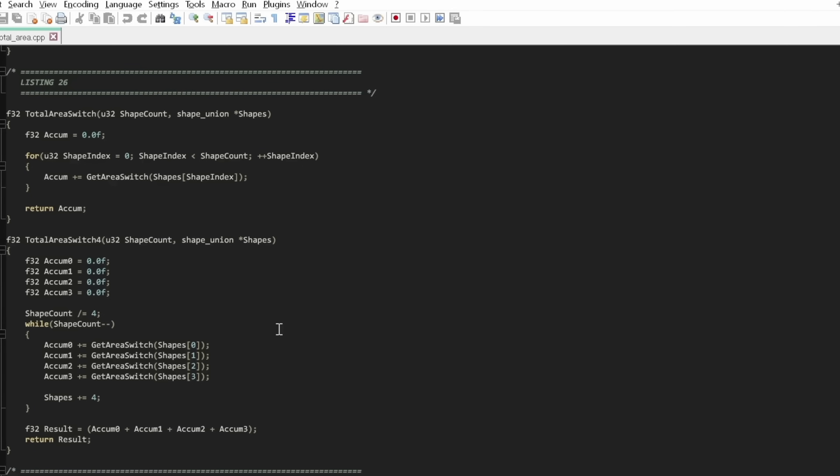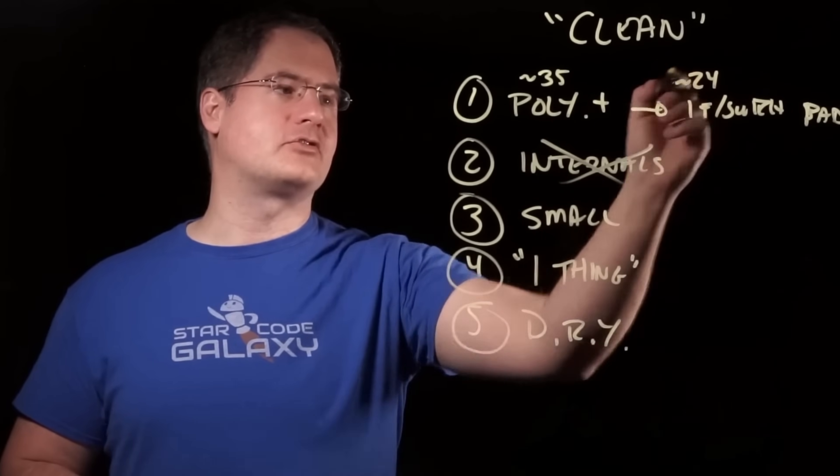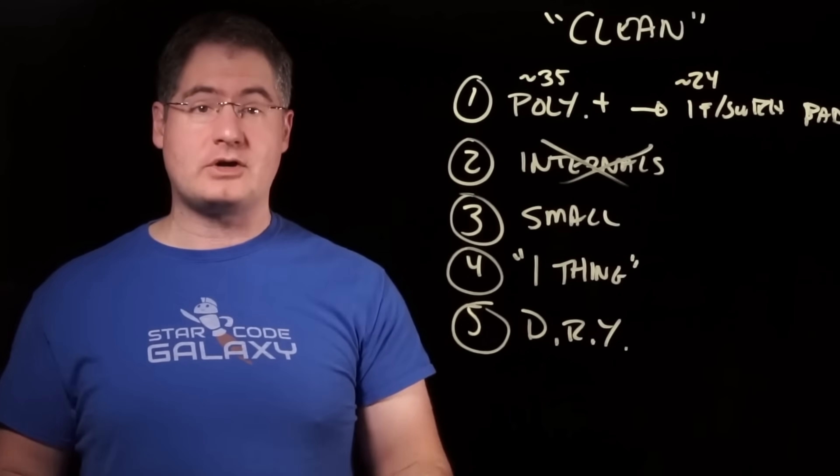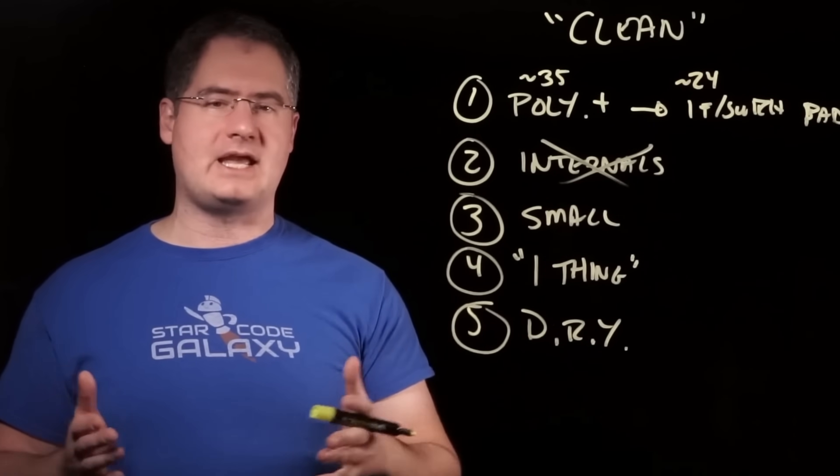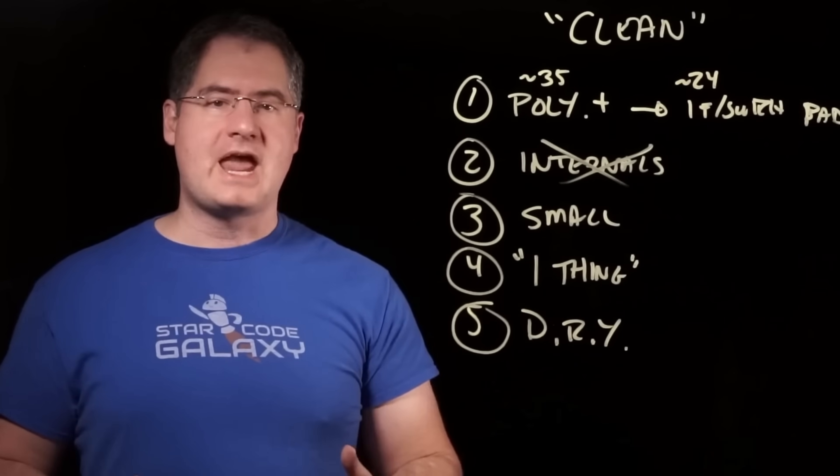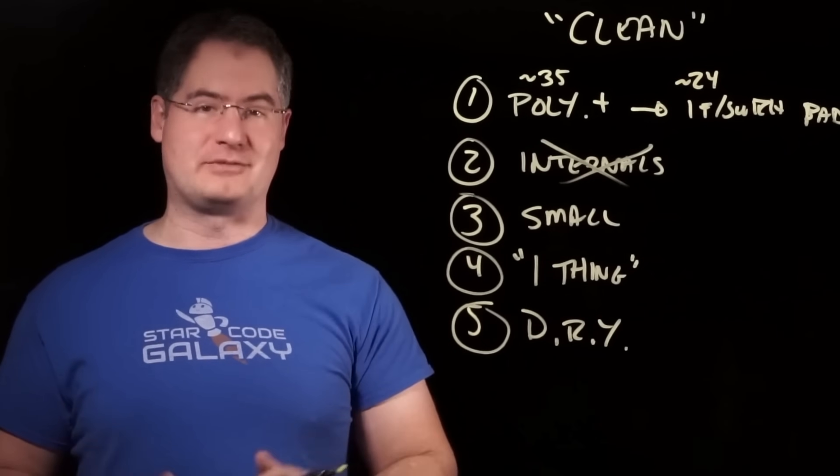The clean version of the code took around 35 cycles. What would happen if we violated just the first rule? Instead of getting the area from a virtual function, you get it from a switch statement - exactly the thing a clean code lecture would tell you never to do. I don't really see any problem with his switch statement. I work in Kotlin most of the time and I use when statements, which are essentially switch functions. We were able to drop down to 24 cycles per shape - that's like reducing an iPhone 14 Pro Max down to an iPhone 11 Pro Max.